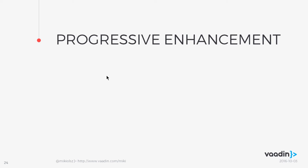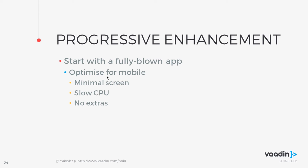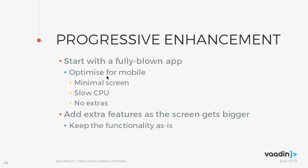The opposite is progressive enhancement — you start with a fully blown app optimized for mobile: very small screen, slow CPU, and basically no extras. The trick is to add features as the screen gets bigger. You keep the functionality as it was, but now you have extra space so you can add more information, more fine-tuned buttons, and more features to the application. This connects to one of the first rules — that you should focus on functionality, keep it simple, start with one thing and do it well. Then if you have extra screen available, you can put extra things there.